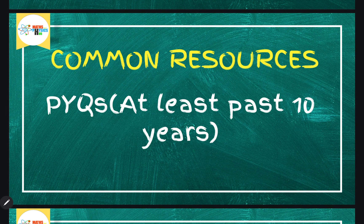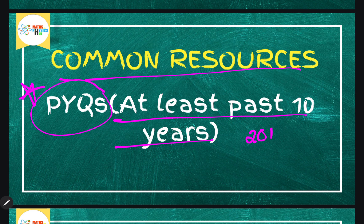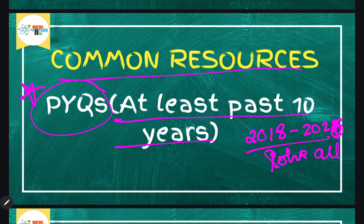Now, a common resource for both coaching and self-study students is previous year question papers. Previous year papers are the base for any exam — theory follows from them. Solve at least the last 10 years, ideally from 2018 onwards since the pattern changed. For 2027 aspirants, solve all sessions of each year's JEE paper. You can buy previous year paper books from Arihant Publications or similar, available on Amazon and Flipkart.